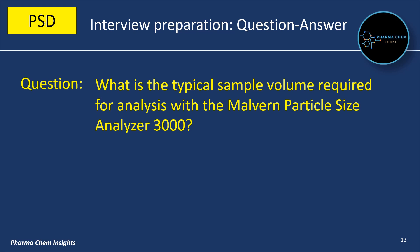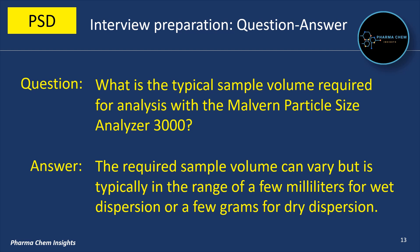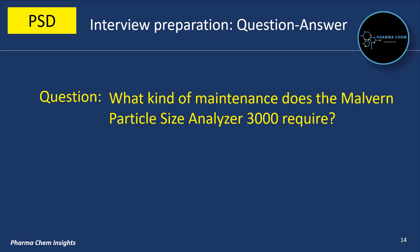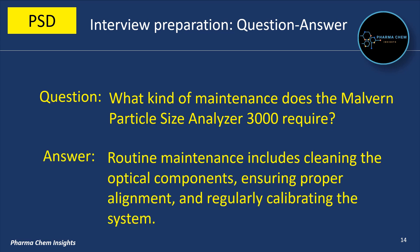What is the typical sample volume required for analysis? The required sample volume can vary but is typically in the range of a few milliliters for wet dispersion or a few grams for dry dispersion. What kind of maintenance does it require? Routine maintenance includes cleaning the optical components, ensuring proper alignment, and regularly calibrating the system.